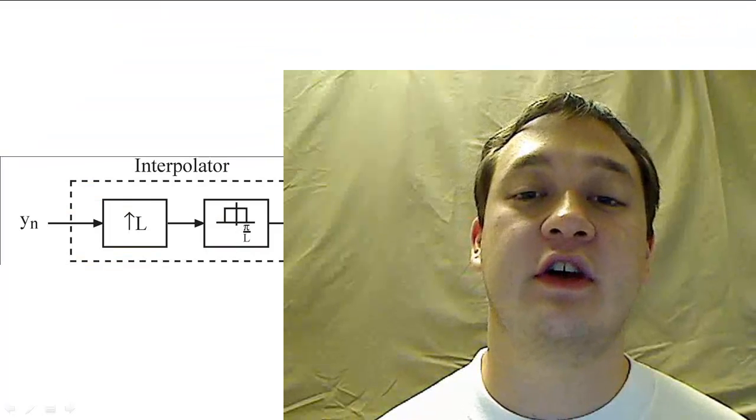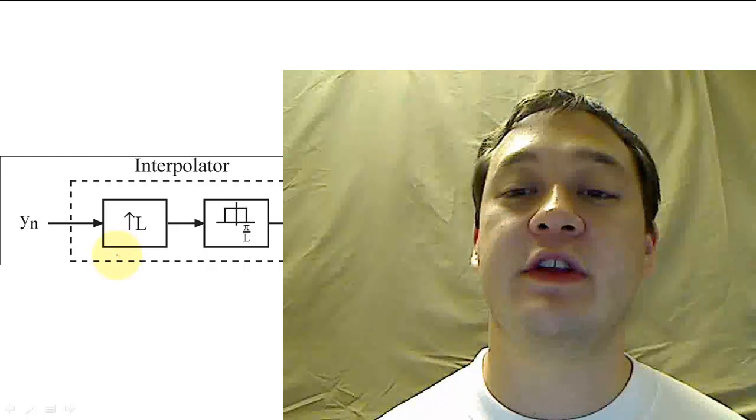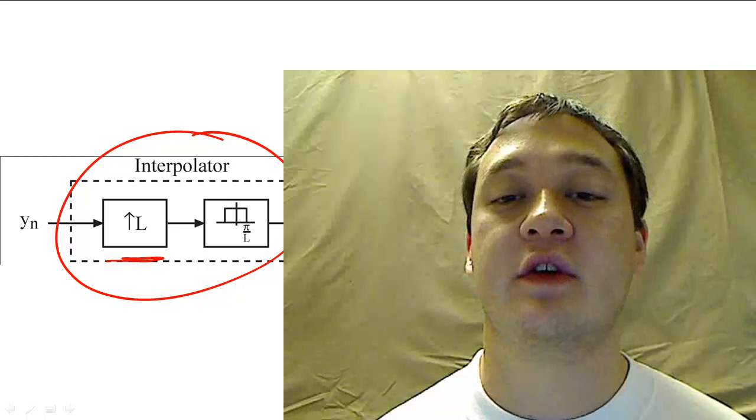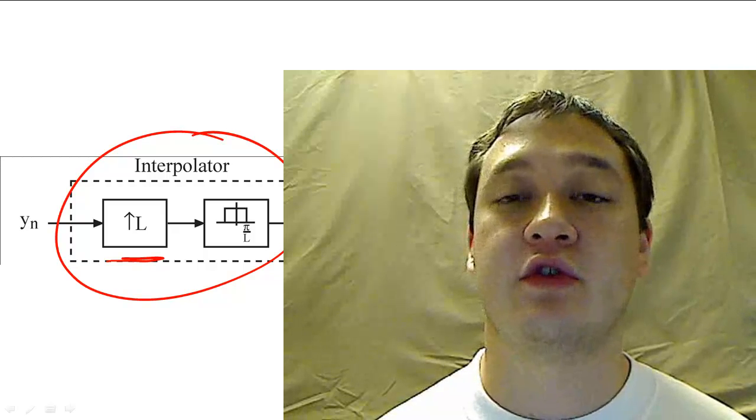In this case, upsampling and interpolating the output Y of N can allow us to create a simpler analog filter that smooths out our zero-order hold.